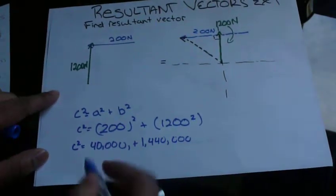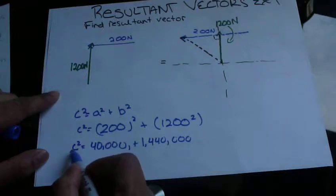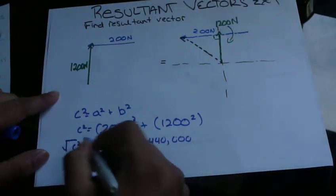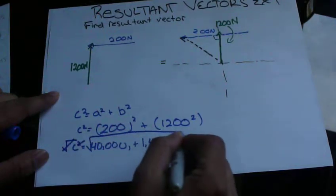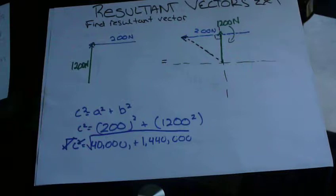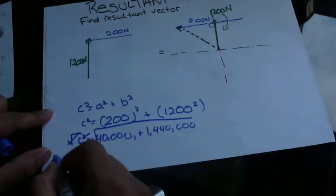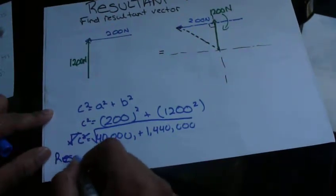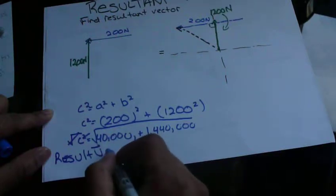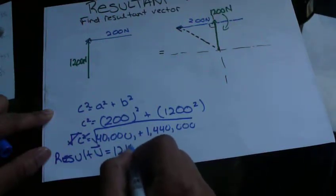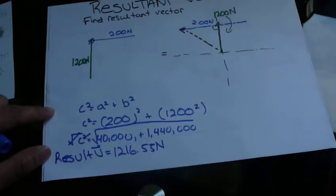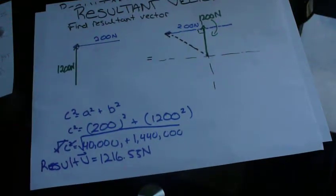So what we're going to do here is add these up. And then to get rid of this square, we're going to square root this. So that goes away. And then we're going to square root the addition of this. So the hypotenuse now, the resultant vector magnitude is equal to 1216.55 newtons.